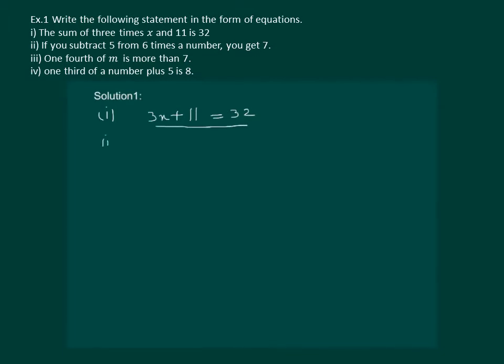Let us read the second part. If you subtract 5 from 6 times a number, you get 7.